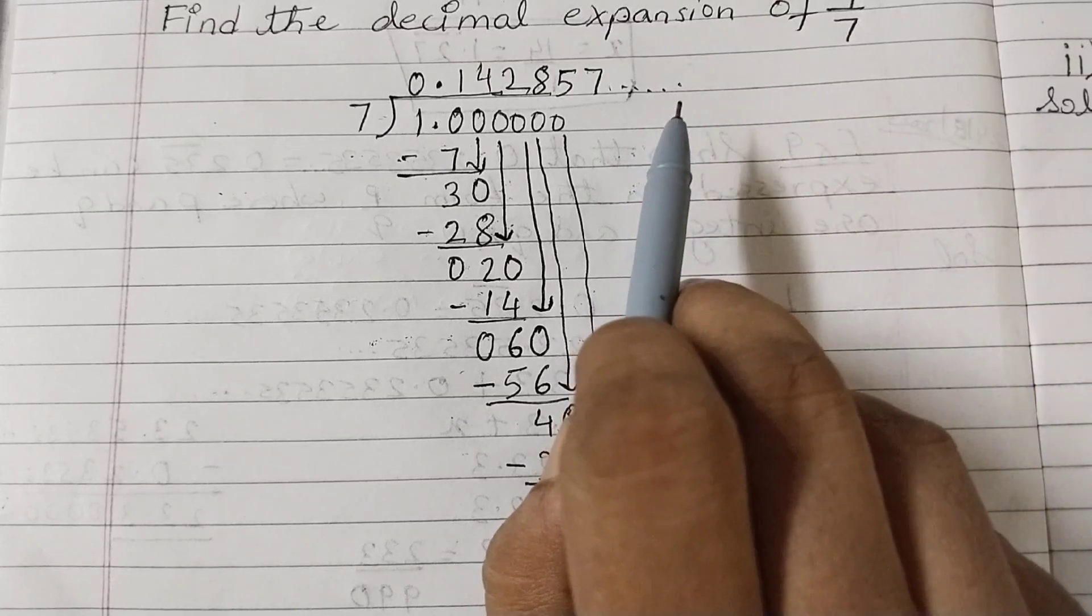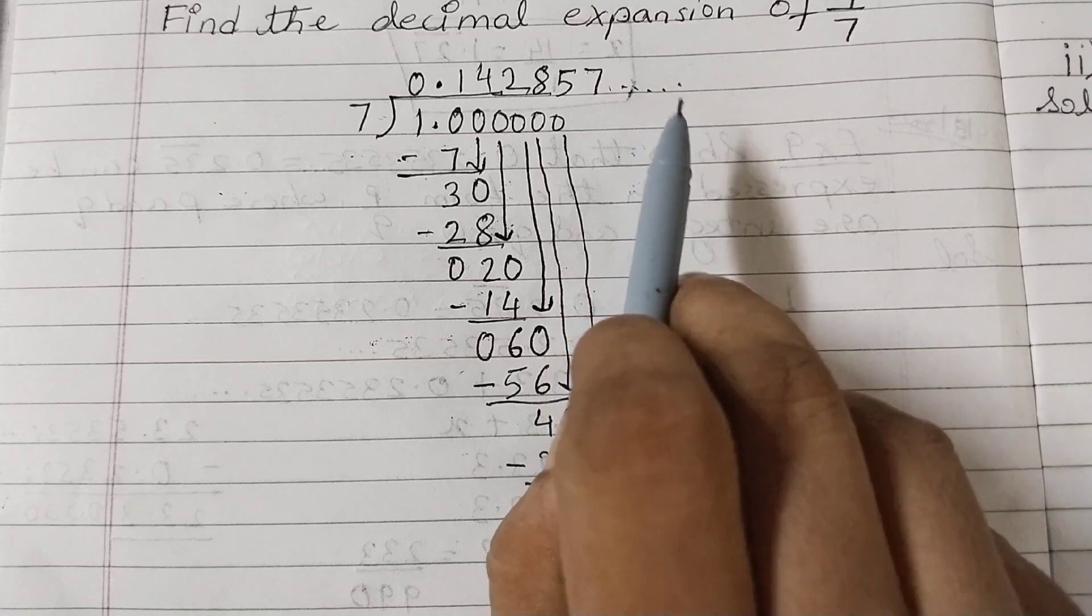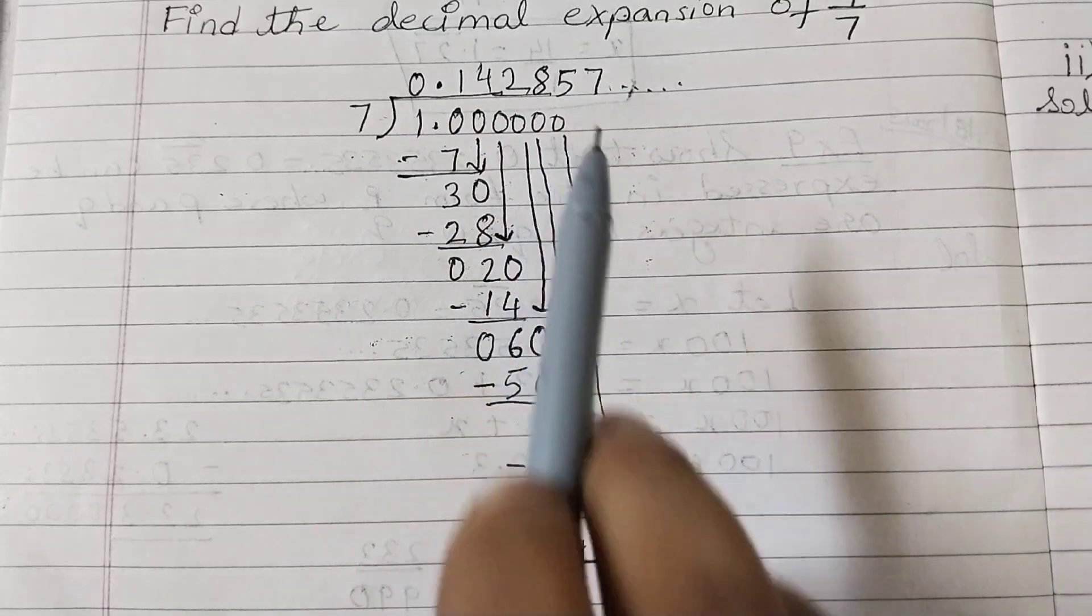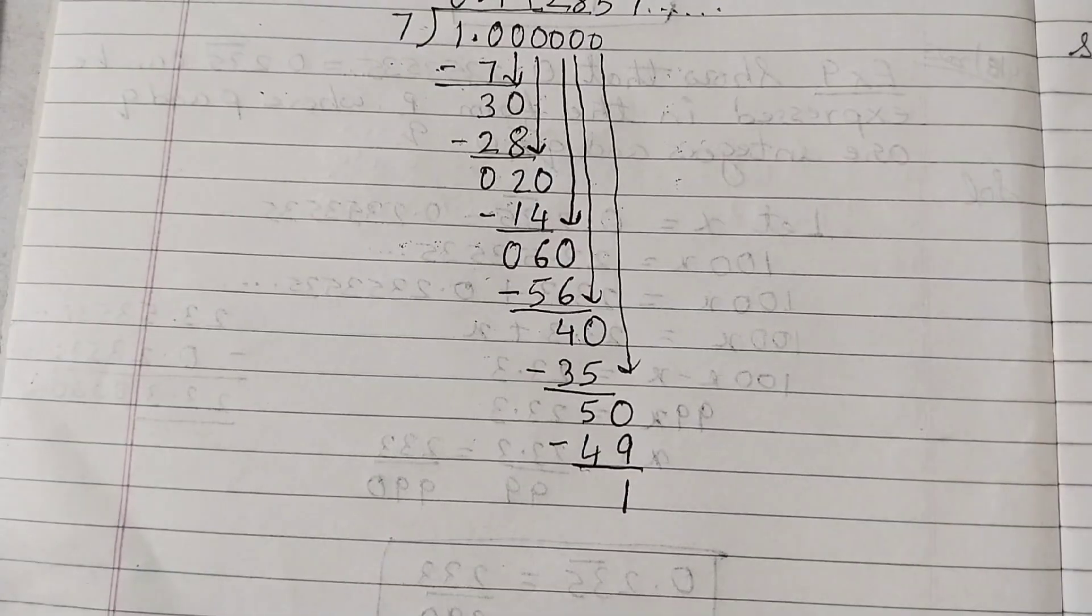This is a non-terminating, repeating decimal because it is going to repeat these 6 digits. So we need to stop here.